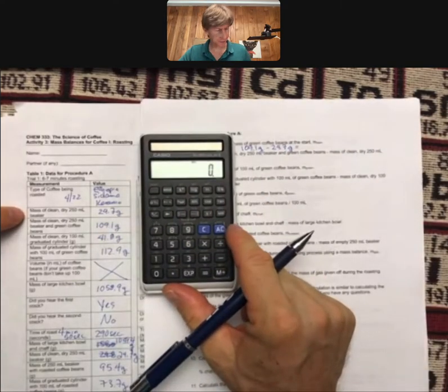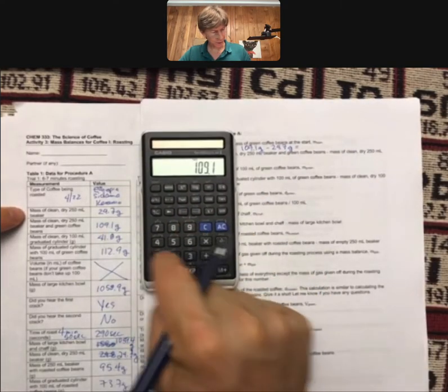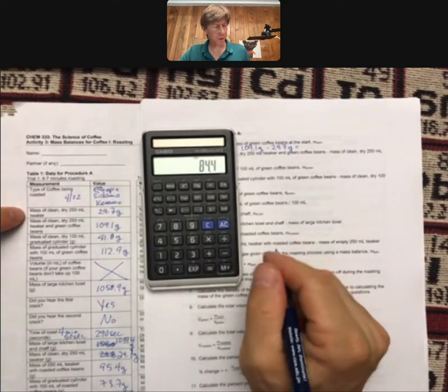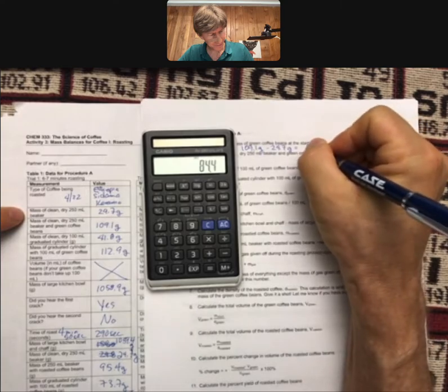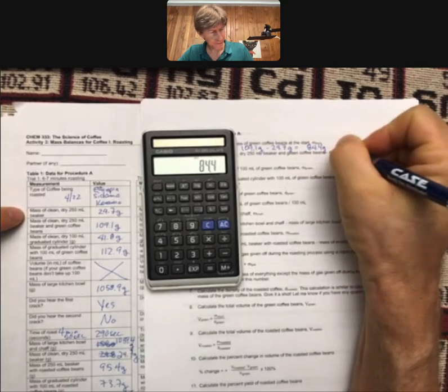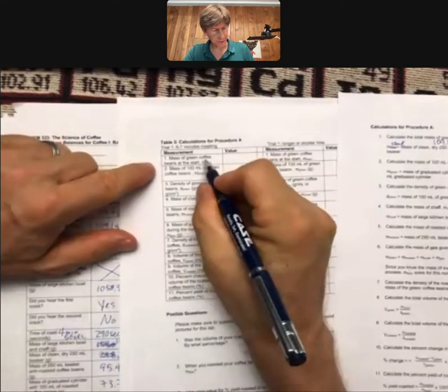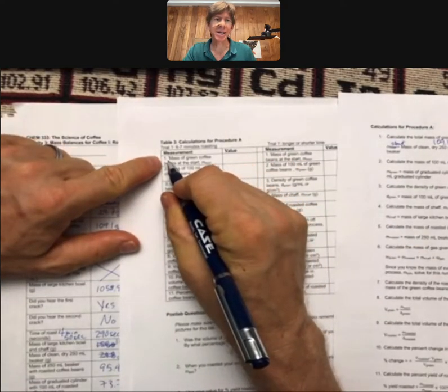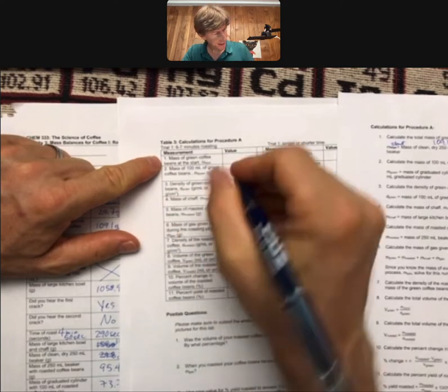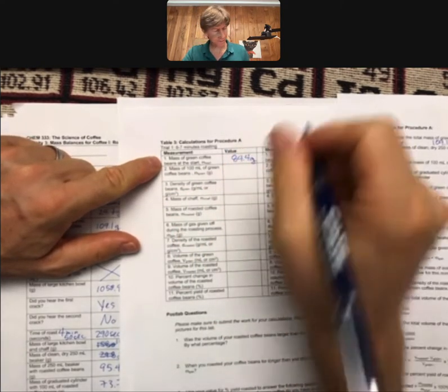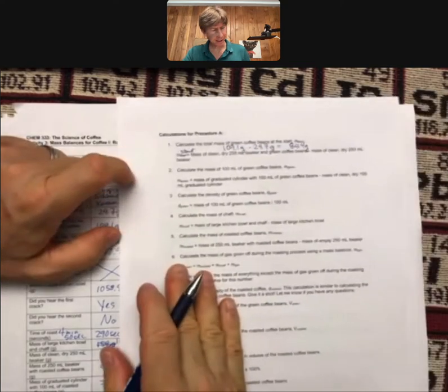109.1 minus 24.7 equals 84.4 grams. That's going to go into mass of green coffee beans at the start. It's calculation number one: 84.4 grams. Good. Now calculate the mass of 100 milliliters of green coffee beans.